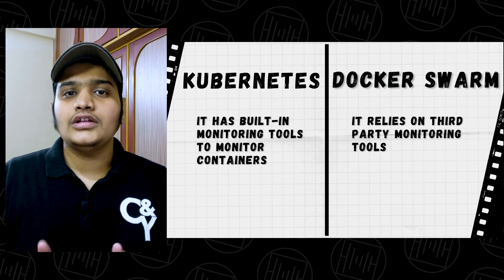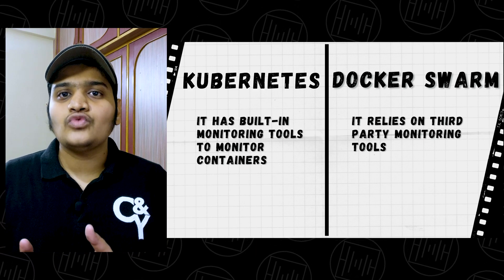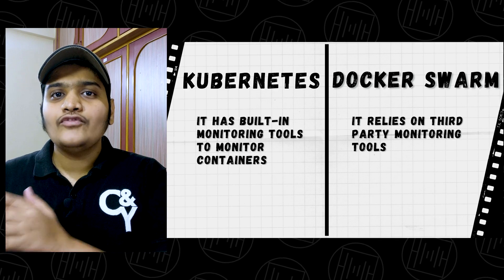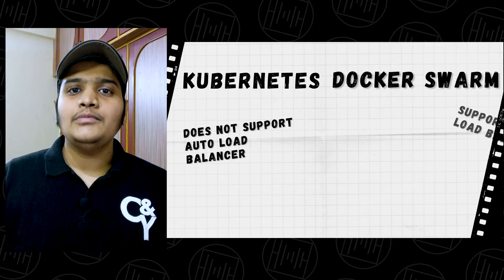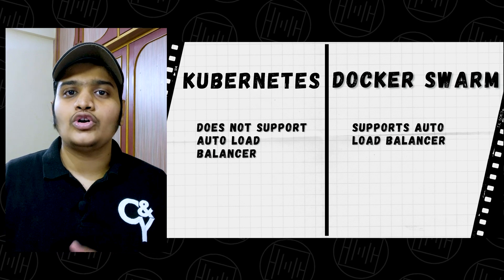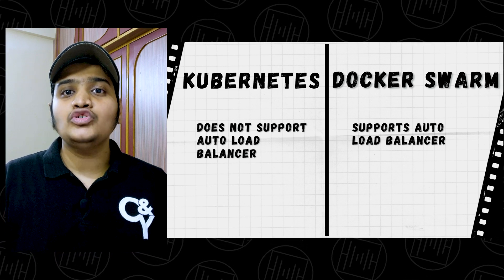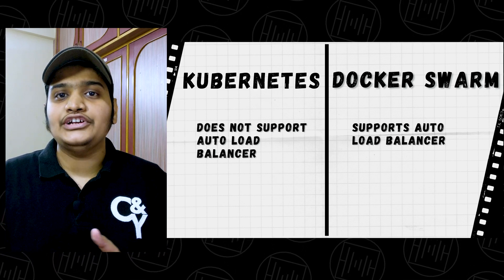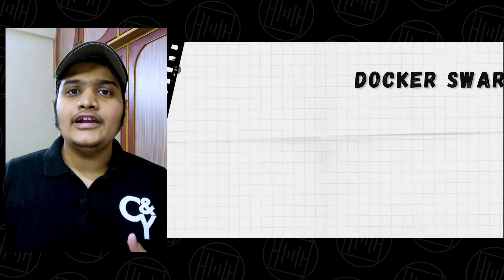Kubernetes has built-in monitoring tools to monitor containers and how they perform. Docker Swarm doesn't have any monitoring tools — it relies on third-party plugins and tools for monitoring containers in a cluster. Due to the complex implementation of Kubernetes, it does not support auto load balancing, but it supports manual load balancer configuration. Docker Swarm, due to its simpler implementation, supports auto load balancing of containers in the cluster.